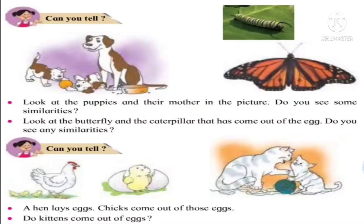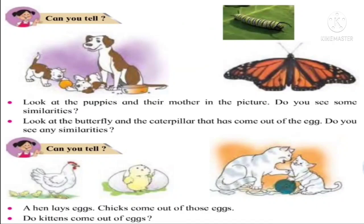Now look at the pictures on the screen. The first picture is of a dog and its young ones — that is puppies — around the dog. Do you find any similarity between them? Of course, they do look similar.